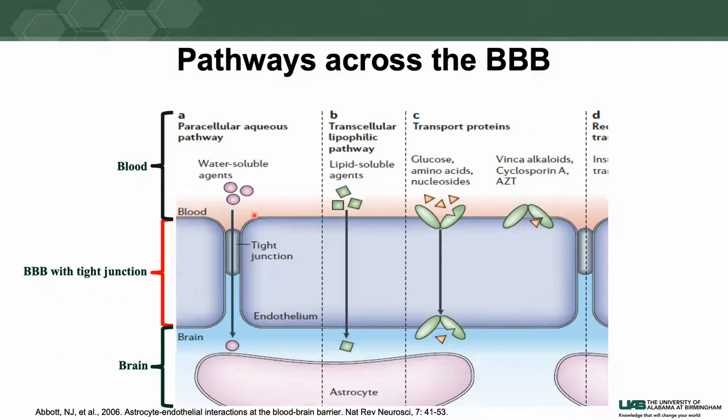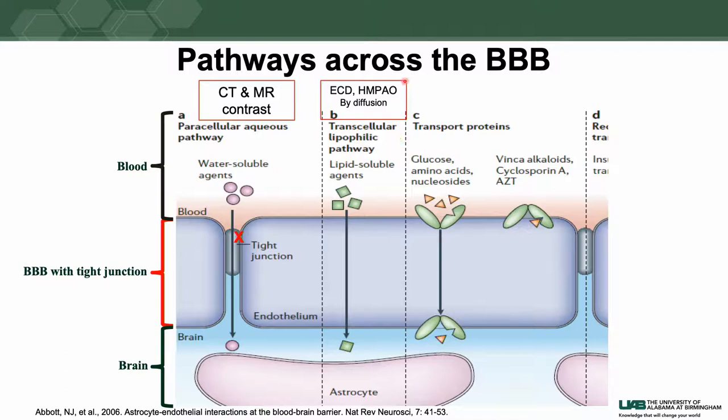For CT and MRI contrast agents to enter the brain, you need disruption of the blood-brain barrier. Whereas for SPECT perfusion tracers, blood-brain barrier breakage is not required — they can diffuse across because they are lipophilic. Similarly, various amino acid PET tracers and FDG also do not need blood-brain barrier breakage, because they are taken up via transporters — blood transporters or amino acid transporters — into the brain.